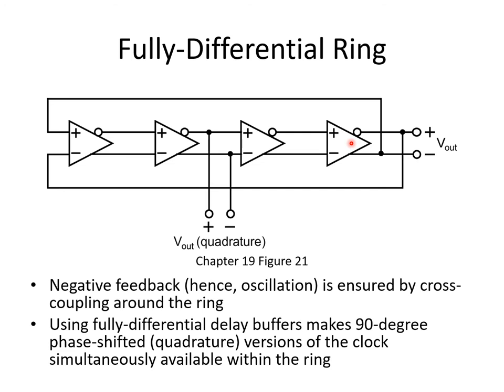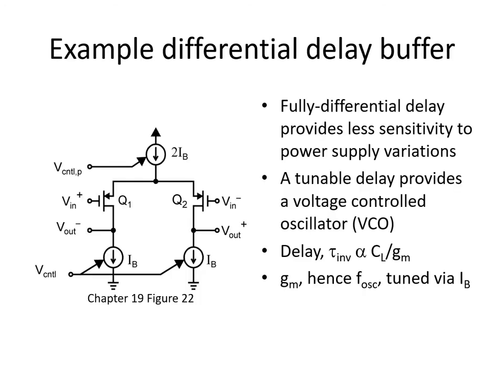A nice thing about using an even number of stages is that by taking opposing points in the ring, you can get clock waveforms that are 90 degrees apart. Quadrature clocks can be very useful in a variety of applications, but you don't get them when N is an odd number. Here's a simple example of a fully differential, controllable delay buffer circuit. You can see that power supply rejection is provided by the tail current source 2Ib above the differential pair.